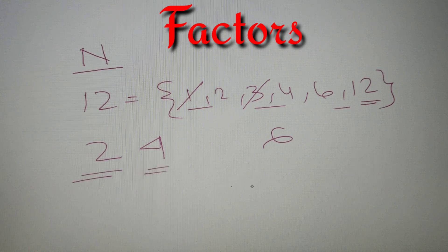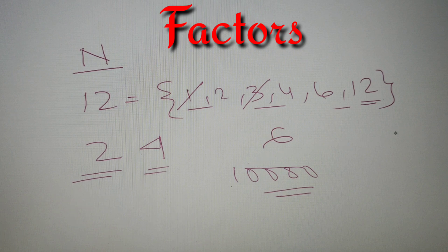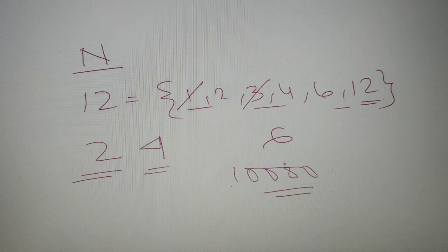Now this was a simple case. What if I tell you to find out the number of odd factors for the number 10,000? Now 10,000 is a very big number compared to 12, and writing down all the factors and sorting out how many are odd is very lengthy and not an optimum method. So let's discuss a simple method to easily calculate the number of odd factors for any given number.